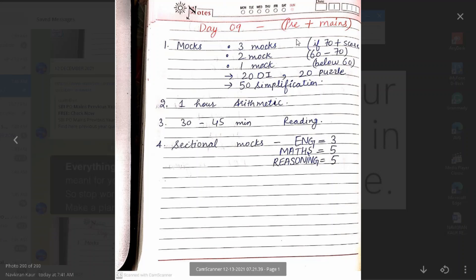And the main thing comes here. If you are getting 70 plus score in your mock tests, then you have to give 3 mocks. You can include one of your memory based. But if you are getting 60 to 70 marks, then you will have to solve 2 mocks. And the extra time you have to focus on your weak areas.